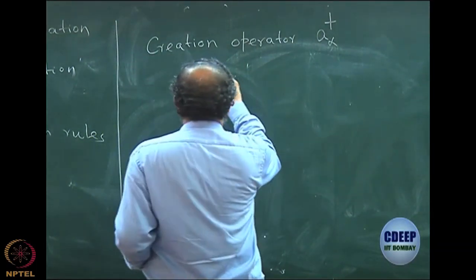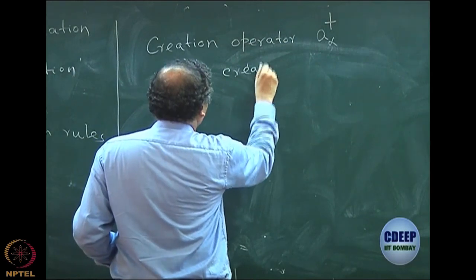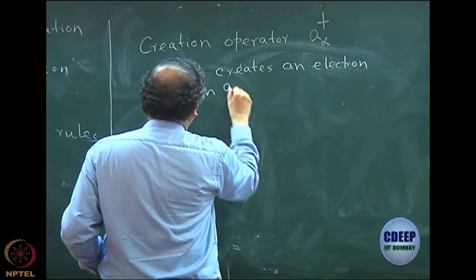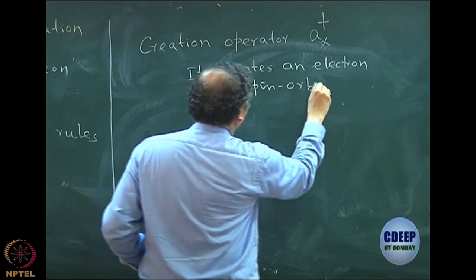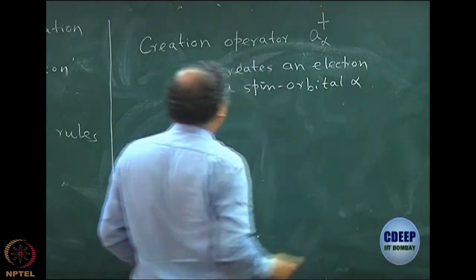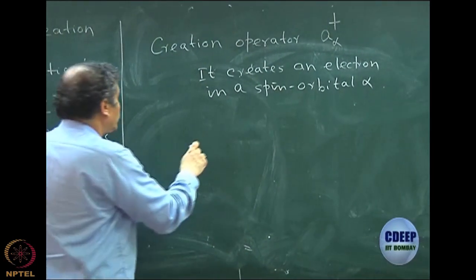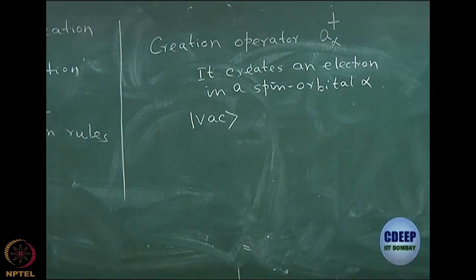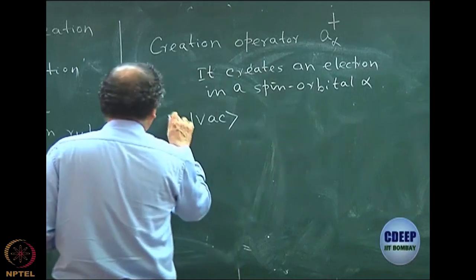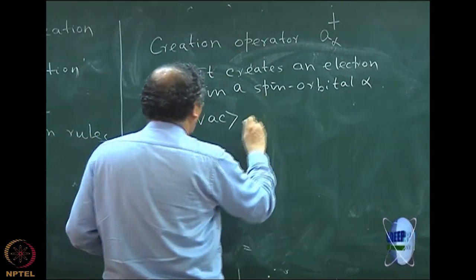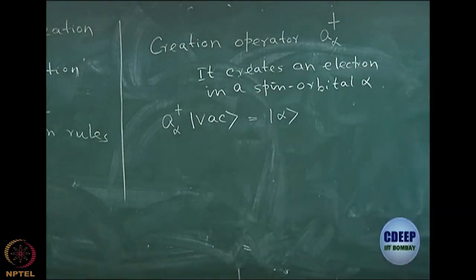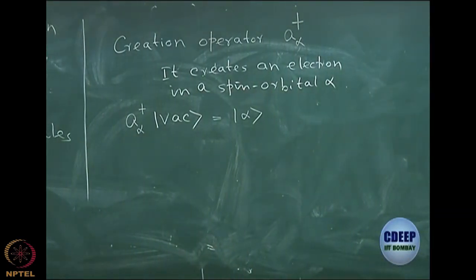What does this mean? This operator will create an electron in a spin orbital alpha. So let us assume that there is something called vacuum — a ket vector called vacuum, meaning nothing exists. Then if I allow a†_α to act on the vacuum, it will create an electron in spin orbital alpha and you will get a one-electron state alpha.